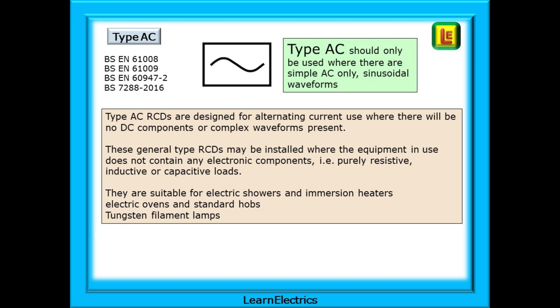Type AC RCDs are designed for alternating current where there will be no DC components or complex waveforms present. They may be installed where equipment does not contain any electronic components — in other words, purely resistive, inductive, or capacitive loads. They are suitable for appliances like electric showers, immersion heaters, electric ovens, standard kitchen hobs, and ideally suited to tungsten filament lamps — the old 60 watt and 100 watt lamps.